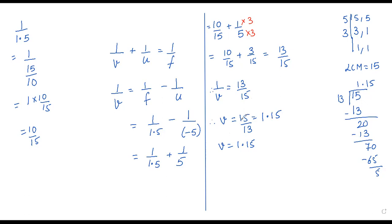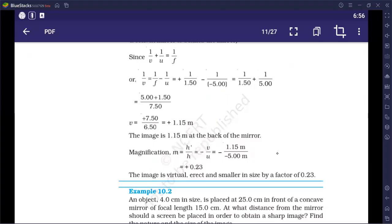Again, our formula was 1 upon V is equal to 13 upon 15. So, what will V be? I have to take inverse. That is 15 upon 13. 15 divided by 13, I have done that division here also. So, you got the answer 1.15. So, what image distance did you get? Image distance you got is 1.15. That is, if I kept the object 5 meters away, where did I get the image? I got the image 1.15 meters away from the mirror.